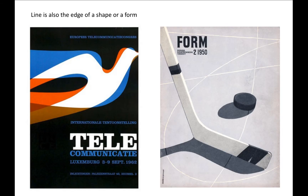Line is also the edge of a shape or a form. Any two shapes butting against each other will always create a line. The edge of a shape is a line. The edge of a form or shapes within a form can be understood as lines.